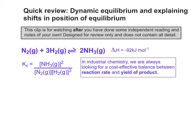When we're trying to describe an equilibrium to do with an industrial process of some kind, we're always trying to think of a cost-effective balance between reaction rate and yield of product. That will drive anything we try to do when talking about industrial chemical processes.